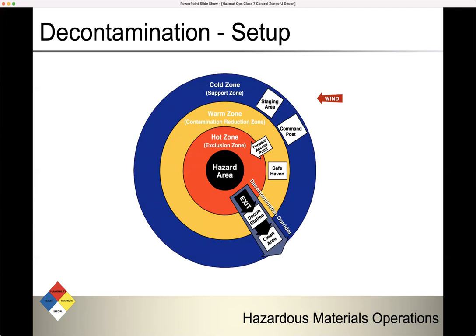Here's an example: you have your hazard area in the center, your hot zone (exclusion zone) out from it, and then we create our decon station. The wind is coming from the right heading left, so our decon area is set up upwind. Our safe haven — where we told victims to go — is also upwind of the hazard, but downwind from the command post, staging area, and decon corridor. So we can have people move from the safe haven over to decon and through decon to exit to the clean area.